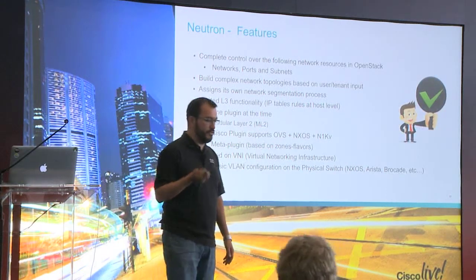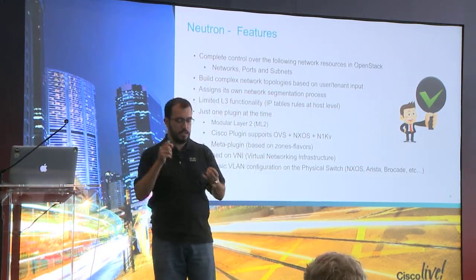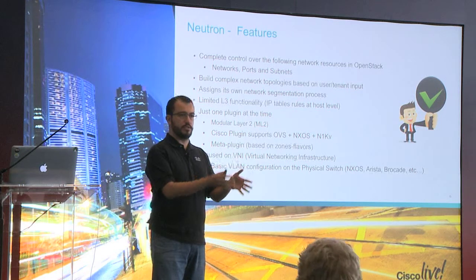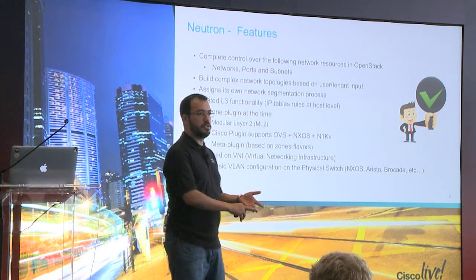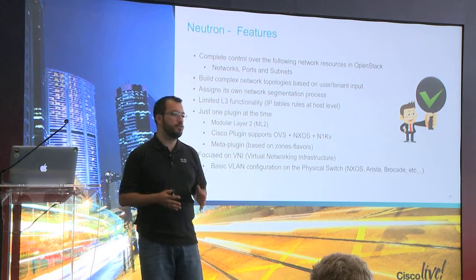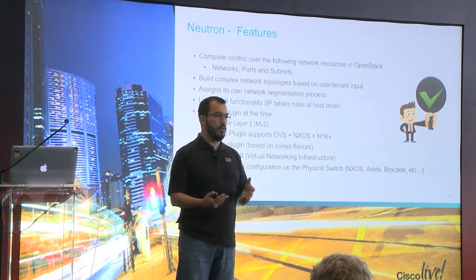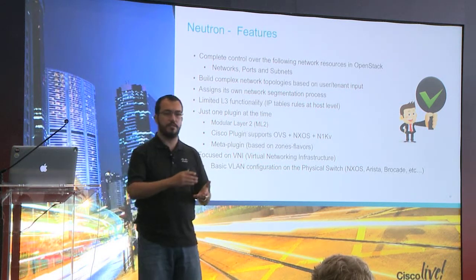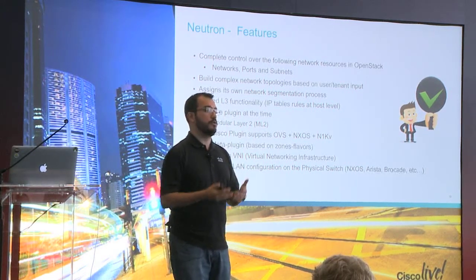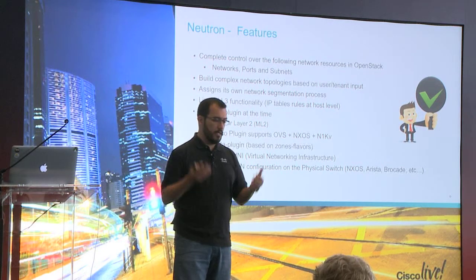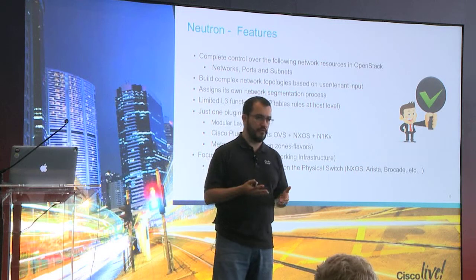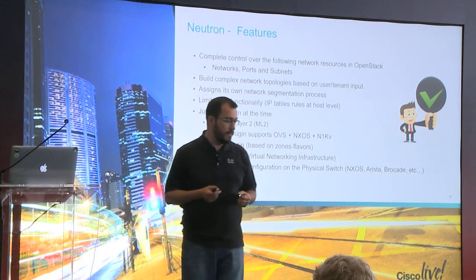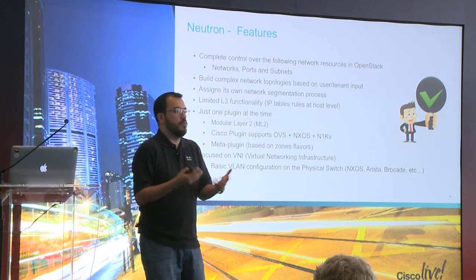What are the Neutron features? It gives you complete control over networks, ports, and subnets. Through the APIs you can create, delete, and update networks, ports, and subnets — these are what we call in Neutron the core APIs. We also have extended APIs: routing functionality so you can create a router, advanced services like load balancers and firewalls, and vendor-specific extensions. For example, you can create specific configurations for a Nexus switch — that's not in the core APIs but in the extended APIs. The framework provides mechanisms to extend those APIs even further, enabling complex topologies owned by your tenants.